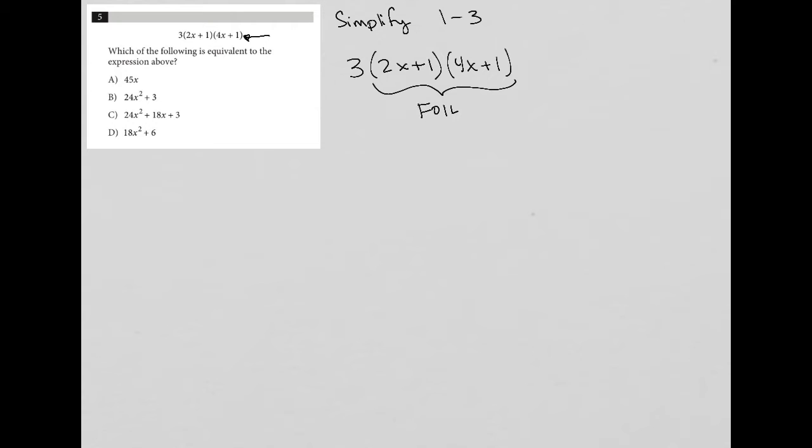So again, FOIL, the F stands for multiplying the first thing here by the first thing there. So let's keep my three here in parentheses. So 2x times 4x is 8x squared.